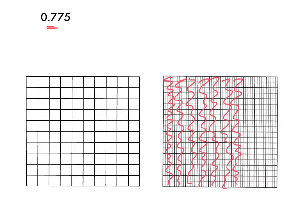Next, I'm going to look at the hundredths place. There are seven-hundredths, so I'm going to shade in seven squares, or seven-hundredths. And lastly, I'm going to shade in five-thousandths. That means I'm shading in five of these little rectangles here, or about half of that square.